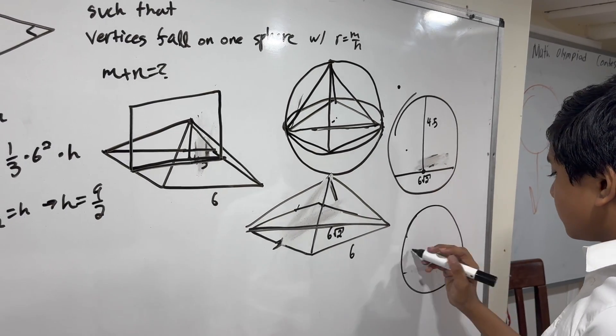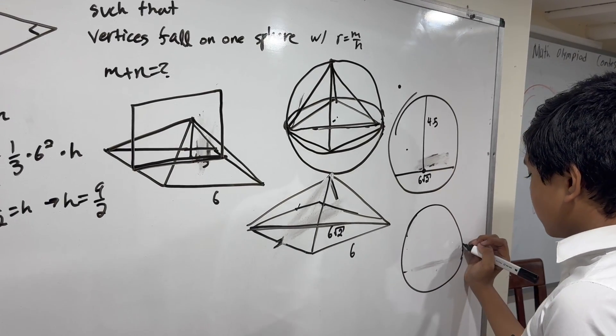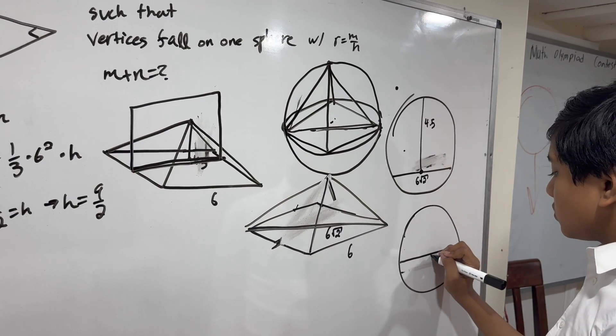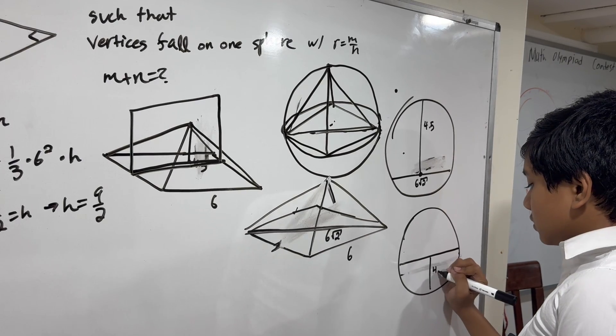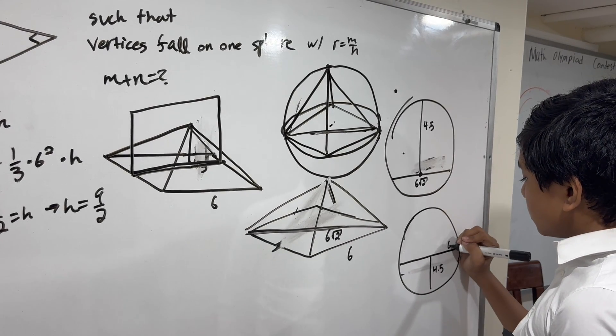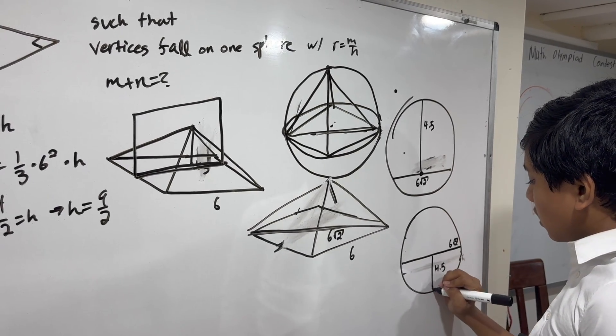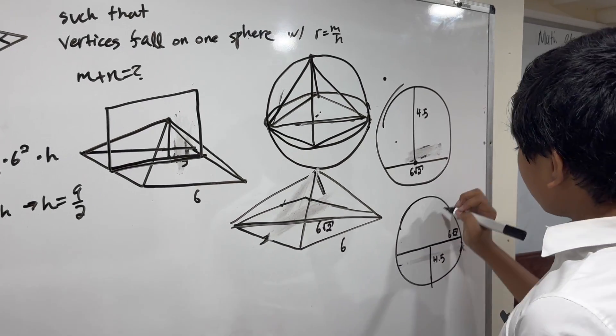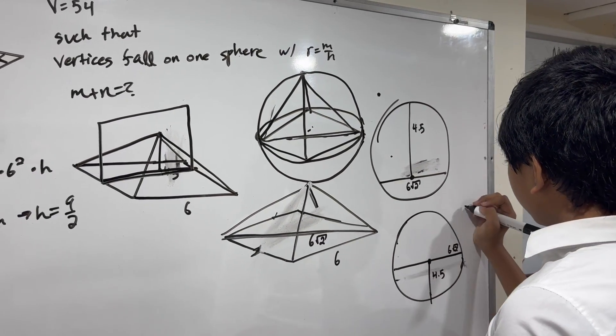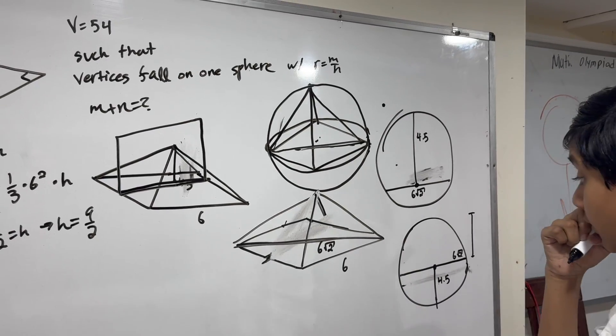I think we could do maybe something a little bit like this. Yeah, that could work. Now to find the radius, all we would have to do is find this length.